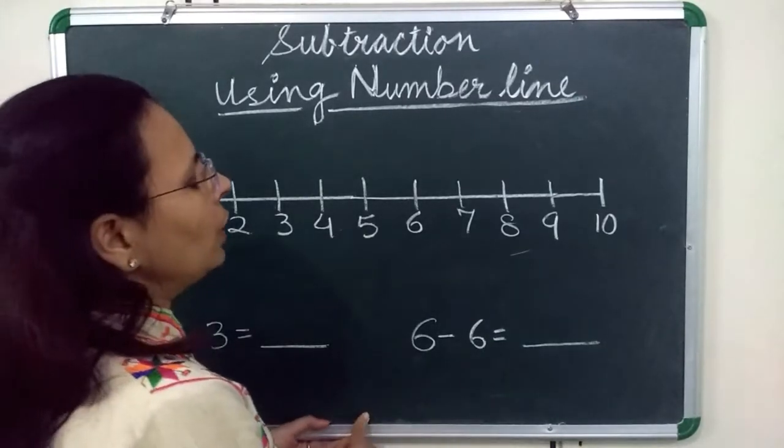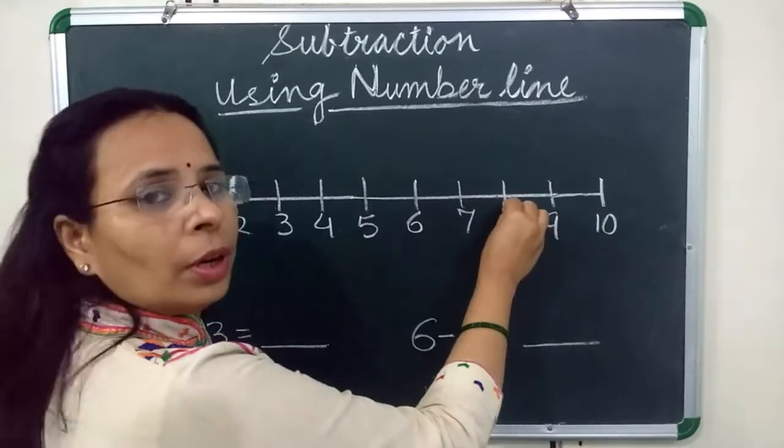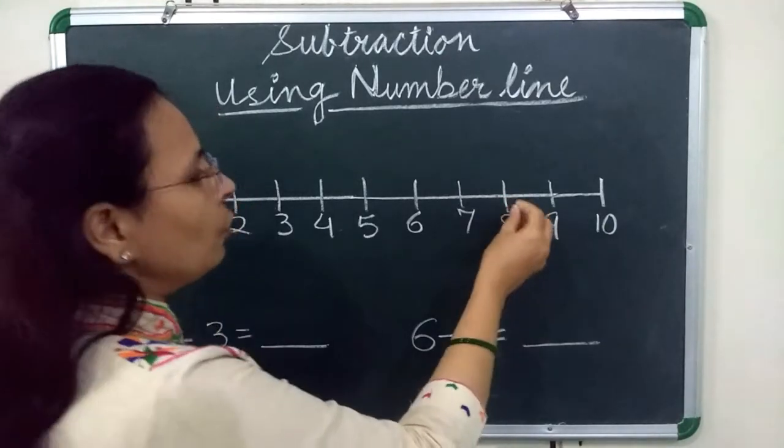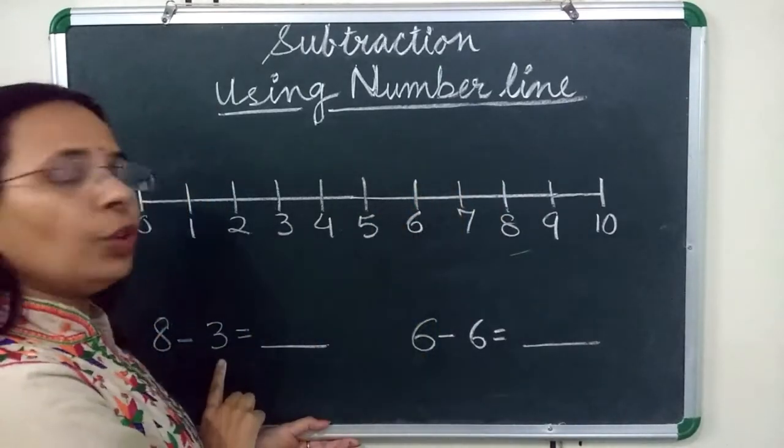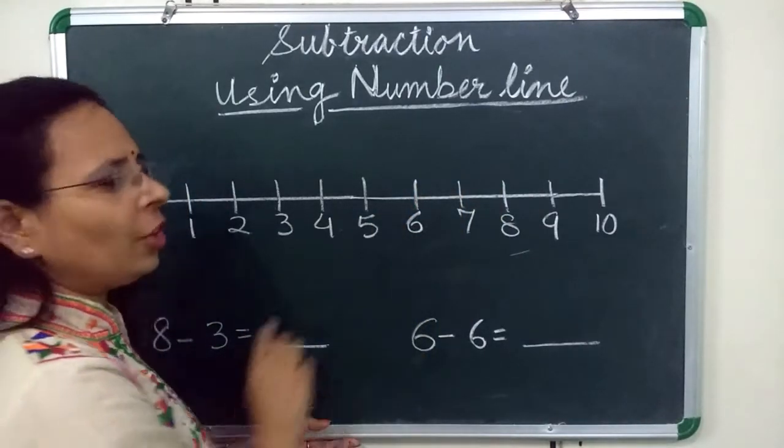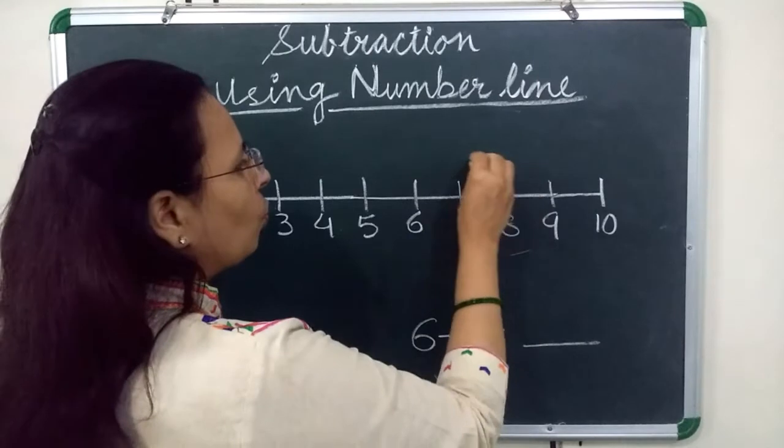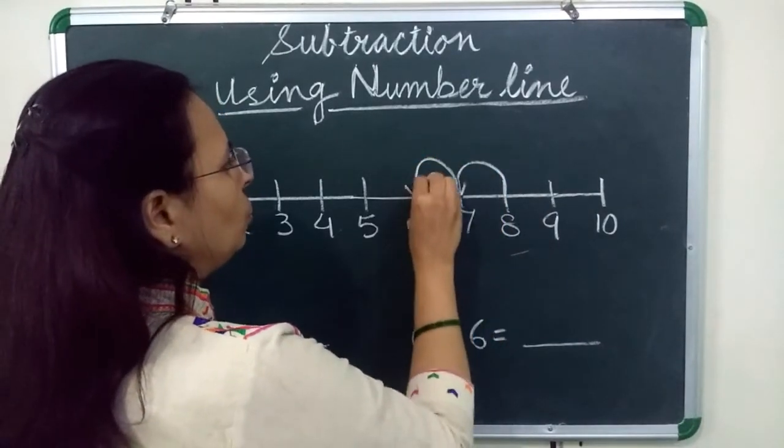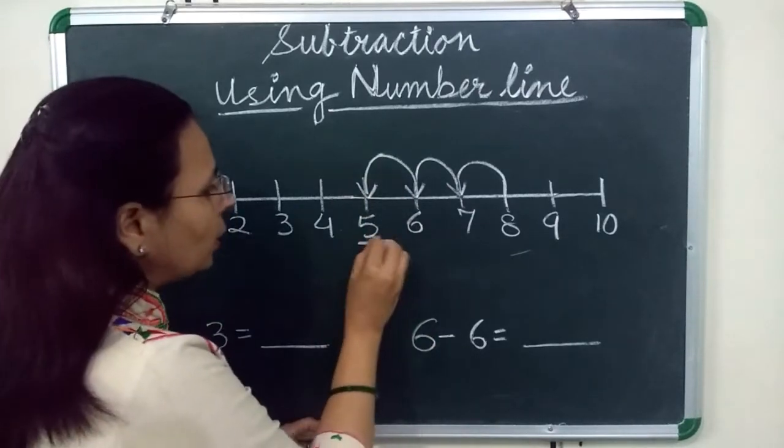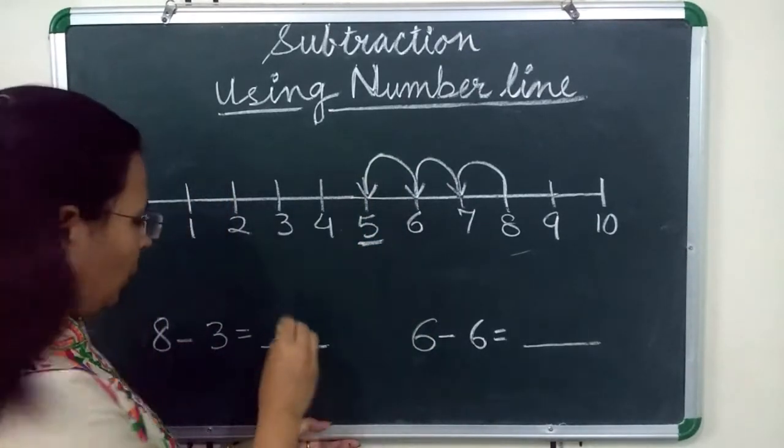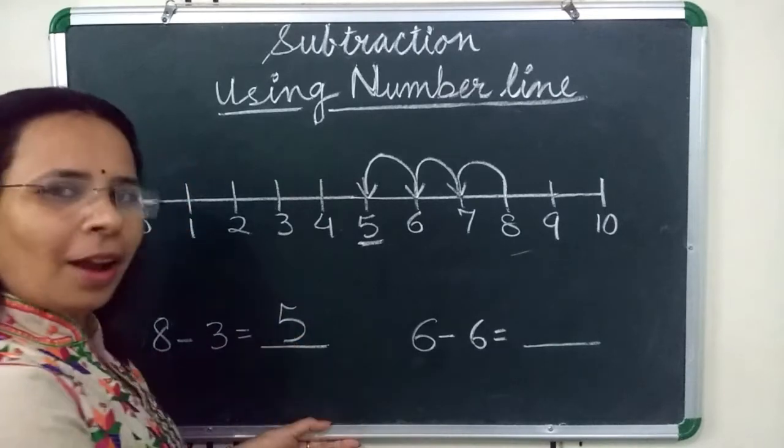So we will start from 8. We will move 3 steps backward because we have to subtract 3. So count with me. 1, 2, 3 and we reach at the place of 5. So 5 is an answer.